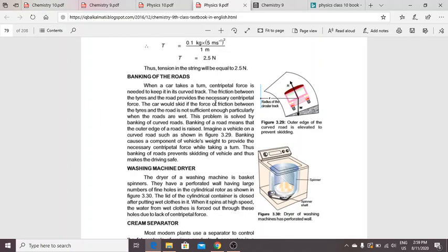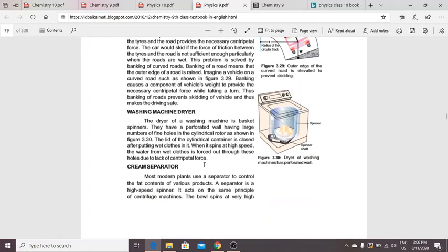We solve this problem by banking of curved roads. Banking means we raise the outer edge of the road. Banking causes a component of the vehicle's weight to provide the necessary centripetal force while taking a turn. Thus, banking of roads prevents skidding of vehicles and makes driving safe.